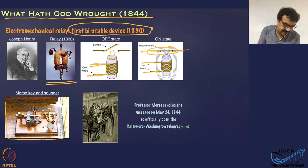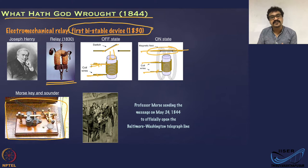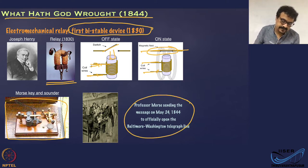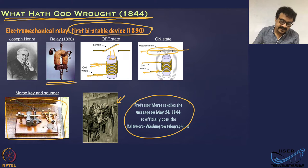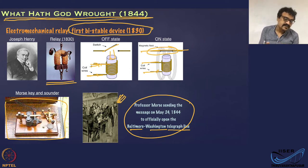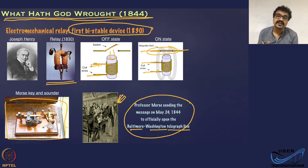The telegraph device shown is a Morse sounder, also with only two states: a long press or a short press. The picture shows Professor Morse sending the first telegraph message — 'What hath God wrought' — transmitted from Baltimore to Washington over a telegraph line. The first electrical device, the electromechanical relay, truly revolutionized communication technology.